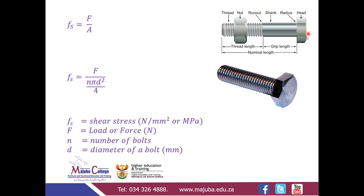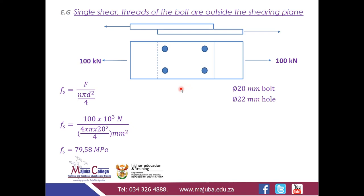In our textbook, all examples are based on the assumption that connections use a partially threaded bolt, meaning shearing takes place where there are no threads. However, the examiner is not limited to questions based on this assumption, so we will also look at what happens when the bolt is threaded throughout.